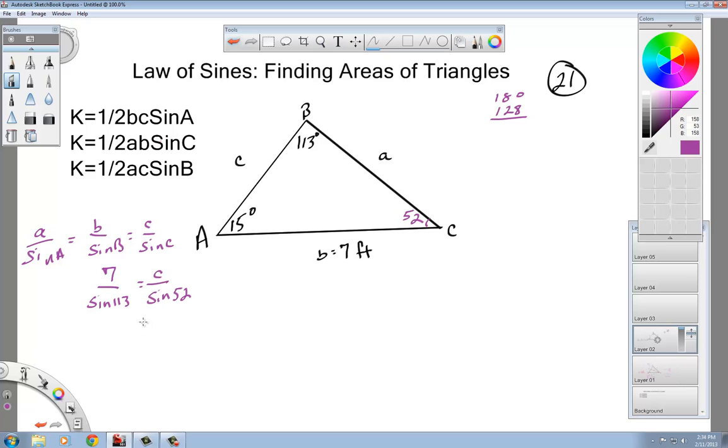And then we have our cross multiplying business. If you're struggling with cross multiplying, if you draw an X through each of these, you will hit on one side of them, you won't hit a letter, you need to multiply those two out. So if you do seven times sine 52, and then divide it by the sine of 113, I get 5.99, which I'm going to call six. Everybody get that?